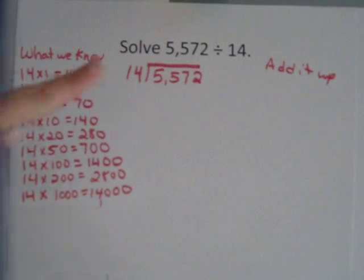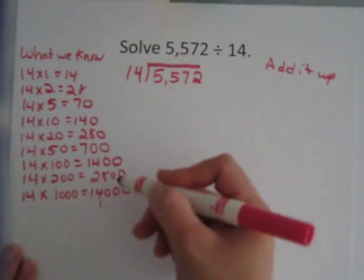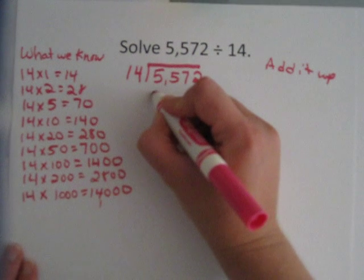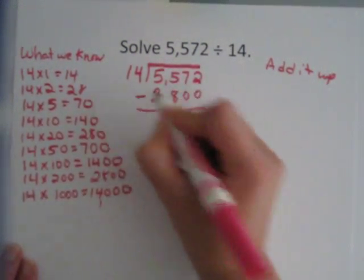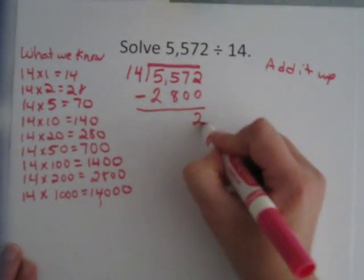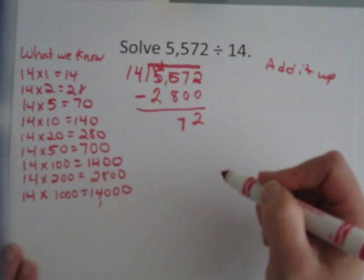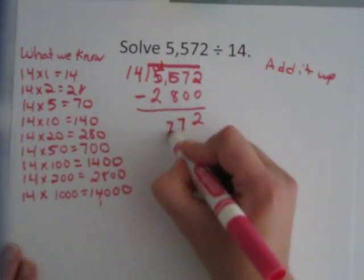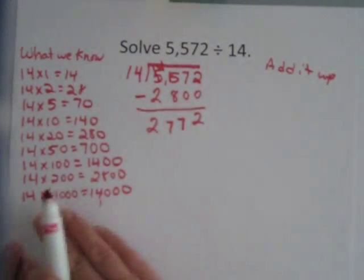Okay, now I'm going to start subtracting out, starting with my 5,572. So I'm going to find the closest number to that without going over, which would be this one. So I'm going to subtract out 2,800. I get 2,772. And I'm going to put under added up, I'm going to put 200.